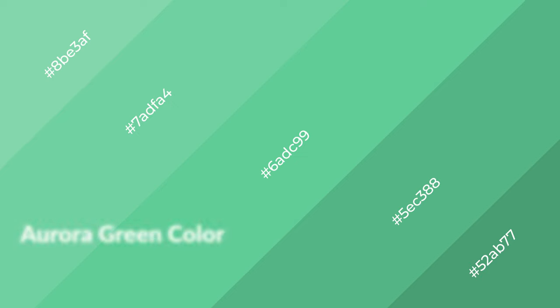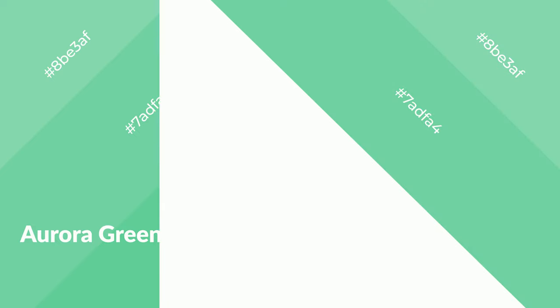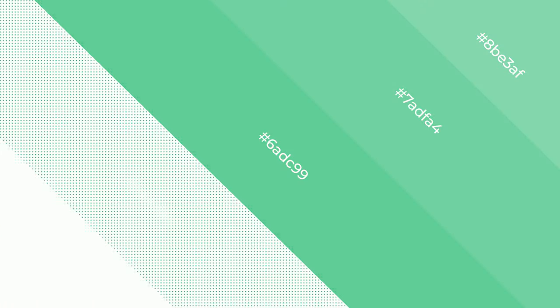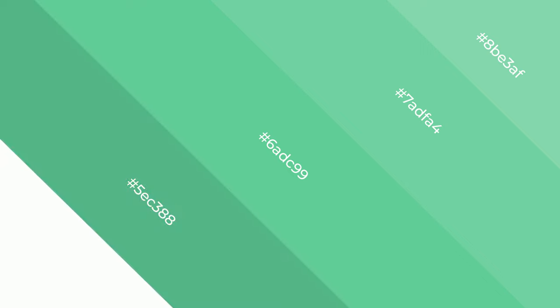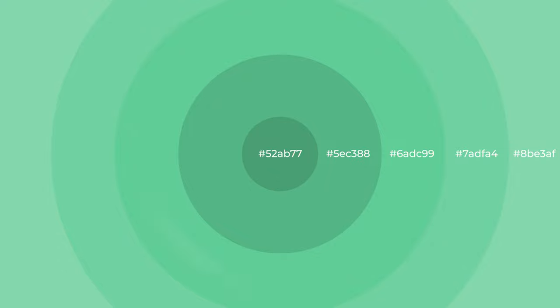Aurora green is a cool color and it emits calming, serene, soothing, refreshing, spacious, unwinding, peaceful, and relaxed emotions. Cool colors are like water, ice, sky, grass, soft, and snow. You can see them used in baby products.